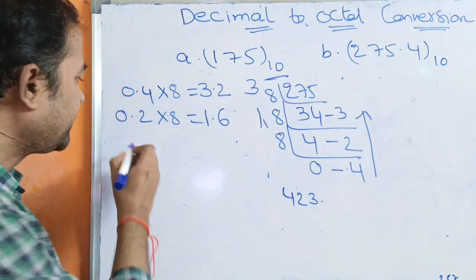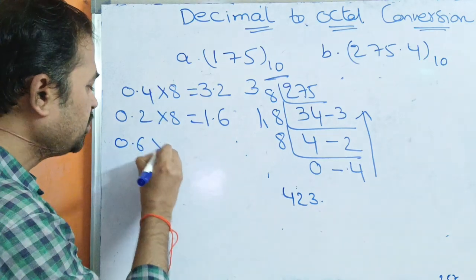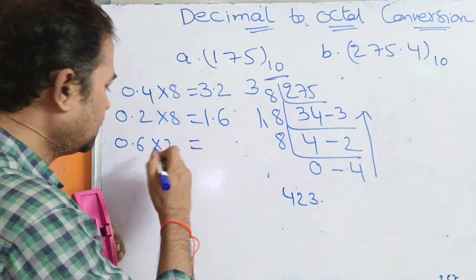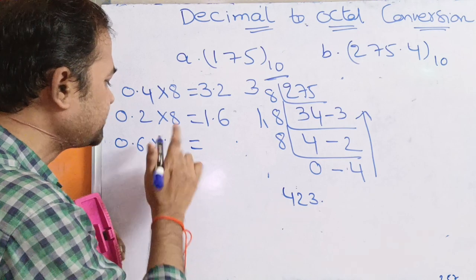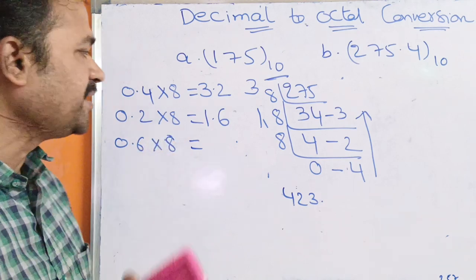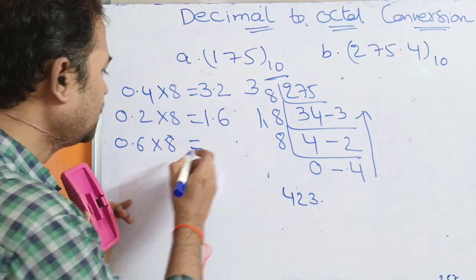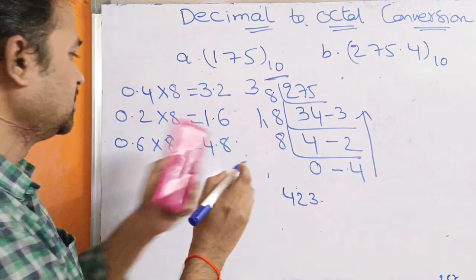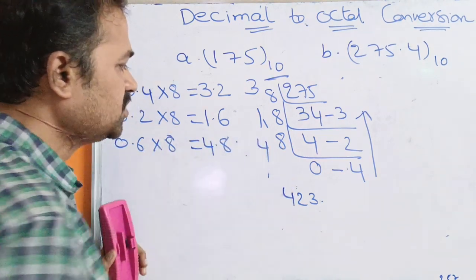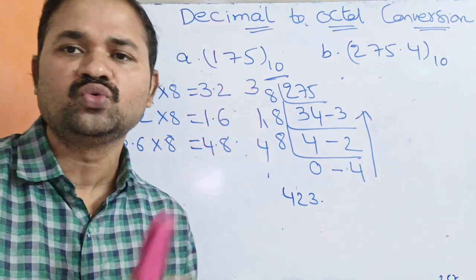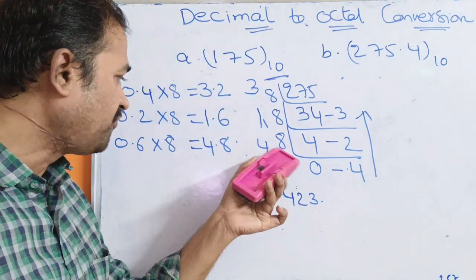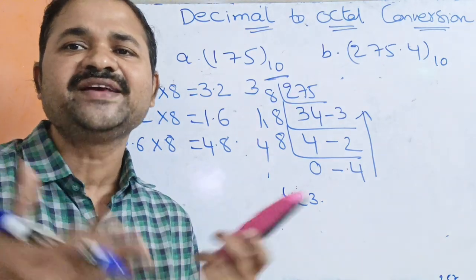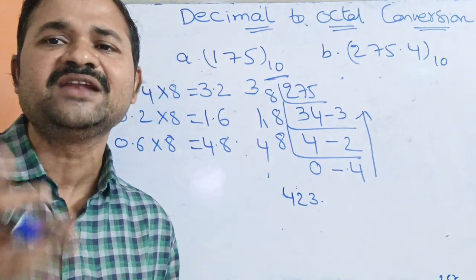So 0.6 multiplied by 8 equals 4.8. The integer part is 4, so we write down 4. After taking 4, the number becomes 0.8. We have to repeat this process until we get 0, or near-zero values like 0.01, 0.02, etc.